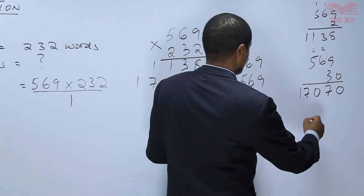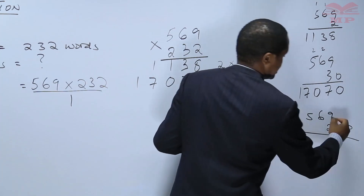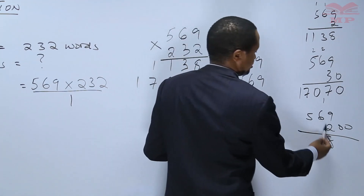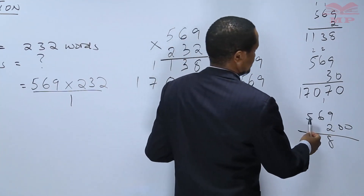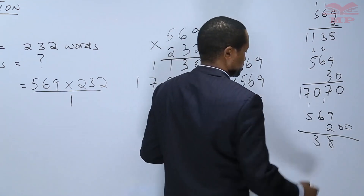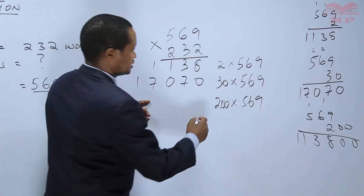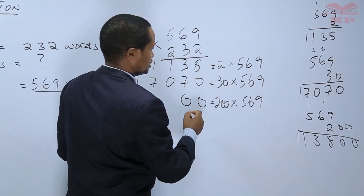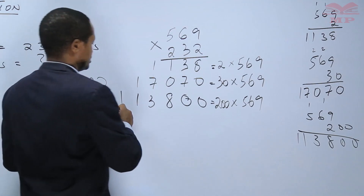Then the last number to multiply: 569 times 200. 9 times 2 is 18, write 8, carry 1. 6 times 2 is 12, plus 1 is 13, write 3, carry 1. 5 times 2 is 10, plus 1 is 11. There are two zeros, so we write 0, 0, 8, 3, 1, 1. Then we add.